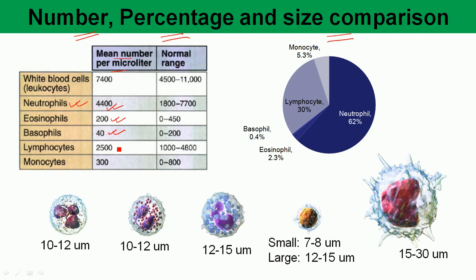The lymphocyte count is much higher at 2,500 cells per microliter, and the monocyte is about 300. As a percentage: monocytes are 5.3%, lymphocytes are 30%, neutrophils are the most abundant at 62%, basophils are 0.4%, and eosinophils are 2.3%.